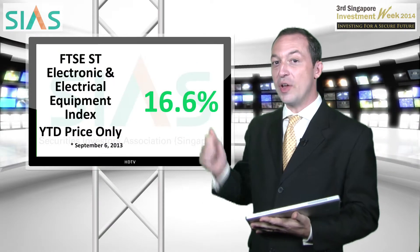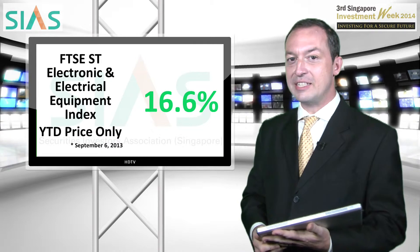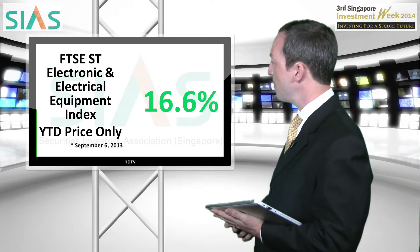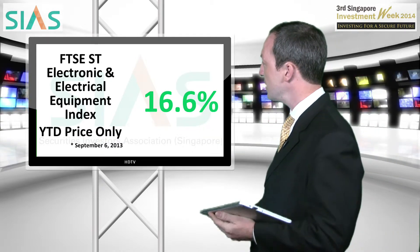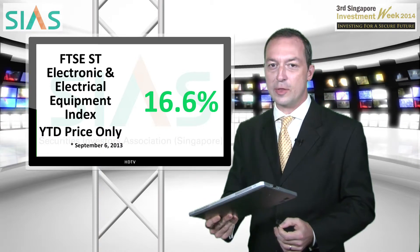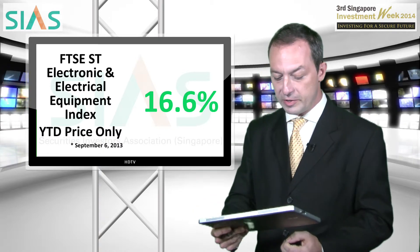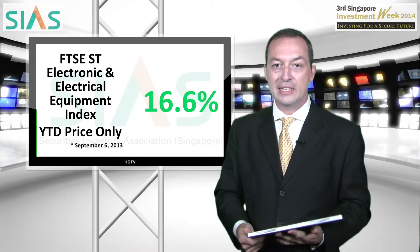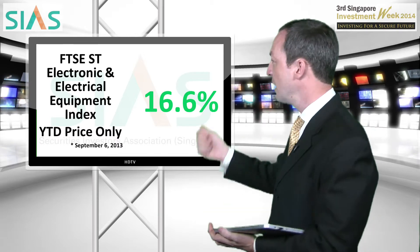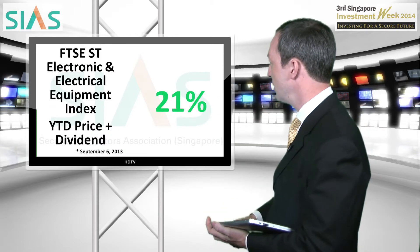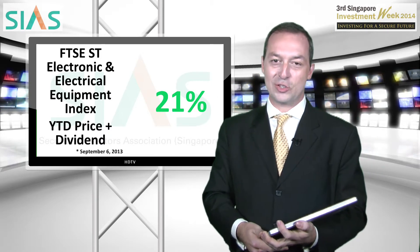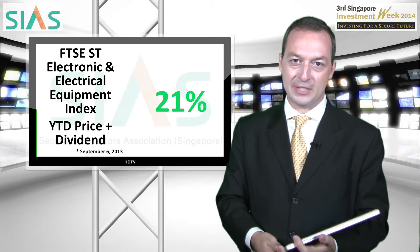Incidentally, if you want to know how the FTSE ST Electronic and Electrical Equipment Index is performing, this is the year-to-date performance to the 6th of September as measured by SGX MyGateway — a 16.5% increase, and if you add the dividends, the increase for the year so far is 21%.